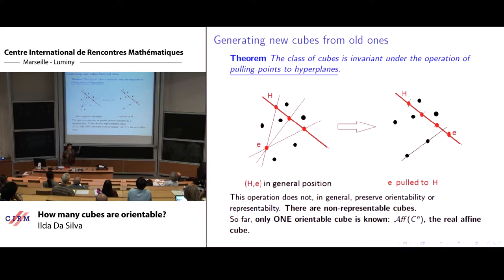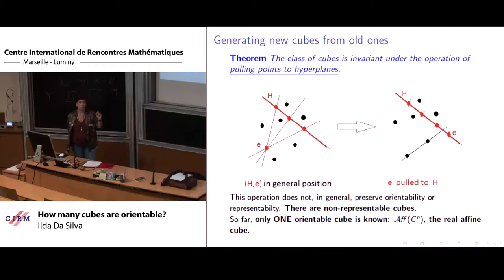One can generate much more cubes because the class of cubes is invariant under the operation of pulling points to hyperplanes, which is the reverse of relaxing. We don't relax. We stress.